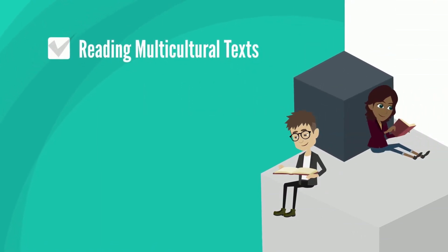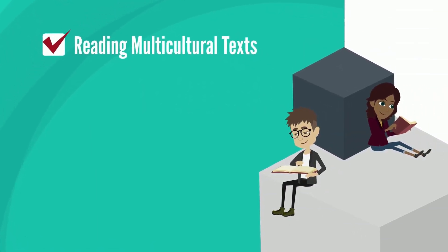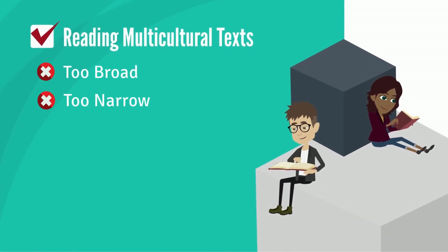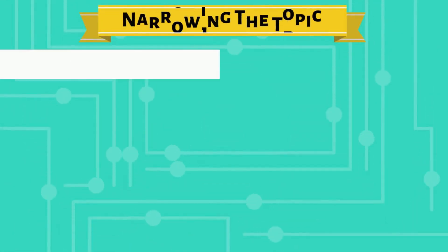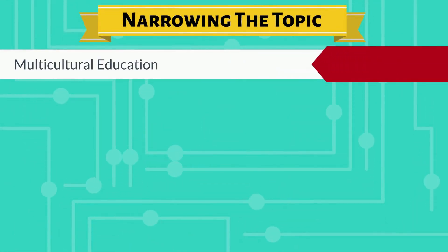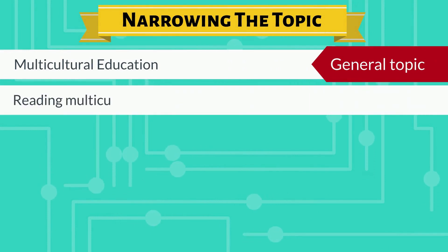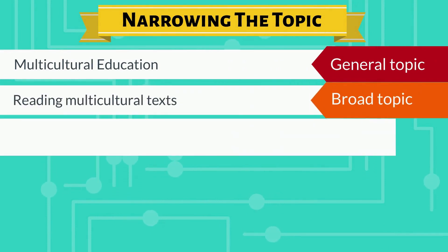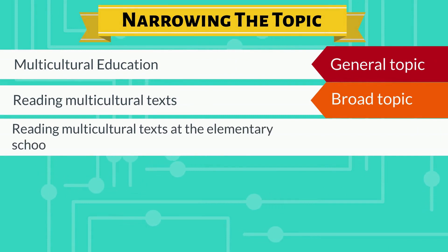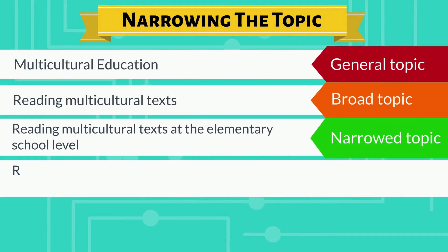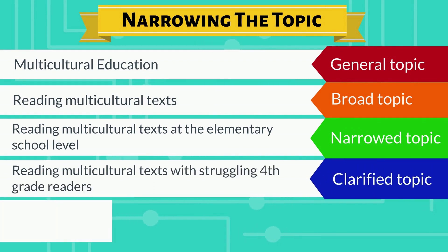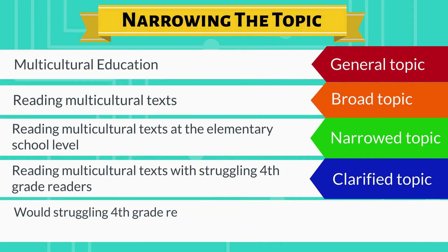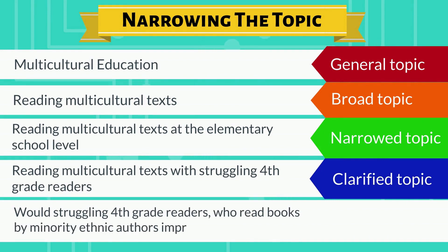You decide to study reading multicultural texts. After you have chosen your topic, you need to refine it to ensure it is not too broad, too narrow, or too vague, but just precise. Narrowing the topic: multicultural education is the general topic; reading multicultural texts is the broad topic; reading multicultural texts at the elementary school level is the narrowed topic; reading multicultural texts with struggling fourth grade readers is the clarified topic.